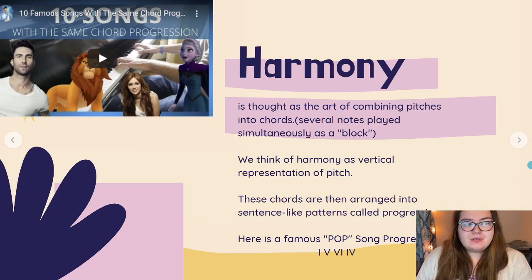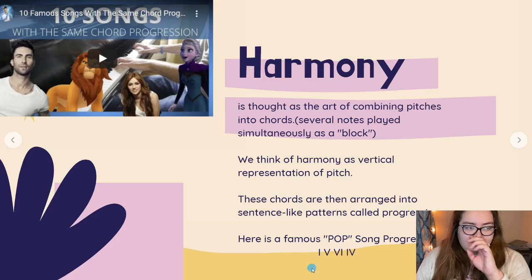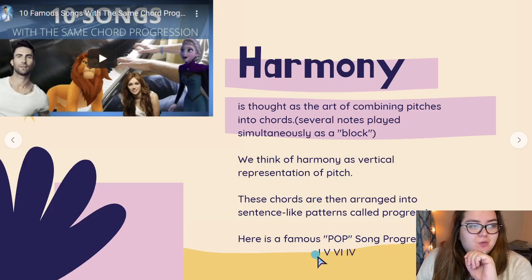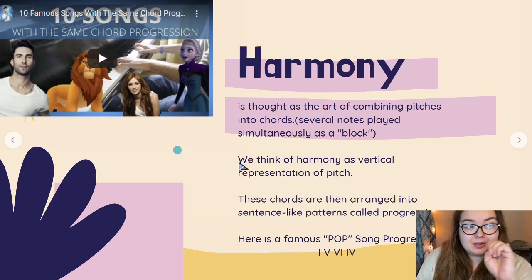These chords are arranged into sentence-like patterns called chord progressions. Here are some of the famous pop song chord progressions. That chord progression is one, five, minor six, and four — so: one, five, minor six, and four. Go ahead and take a look at this video and listen to 10 songs that have the same chord progression. Link down below.